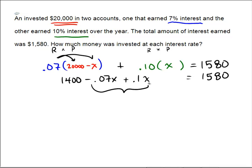Next, let's collect like terms. Negative 0.07 plus 0.1 is 0.03x with a 1,400 here, and that would be positive this time, equals 1,580.